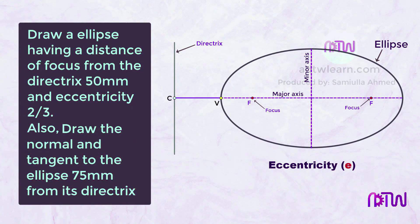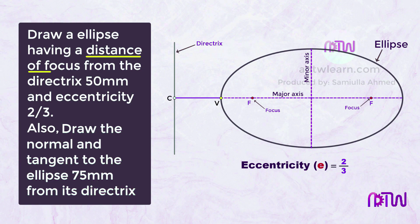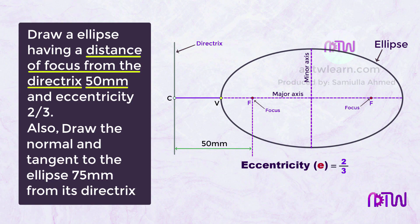Here are the instructions for drawing the ellipse: draw an ellipse having the distance of focus from the directrix as 50 millimeters and eccentricity 2 by 3. Also draw the normal and tangent to the ellipse 75 millimeters from its directrix. The distance of focus from the directrix is 50 millimeters, and the eccentricity, denoted by e, is 2 by 3.